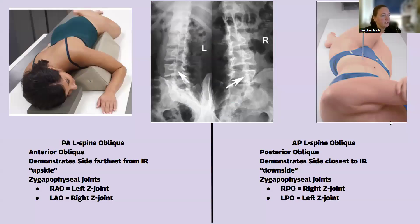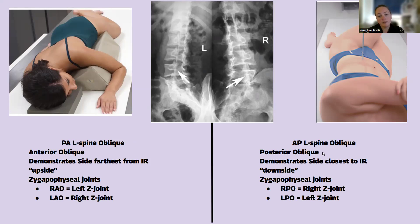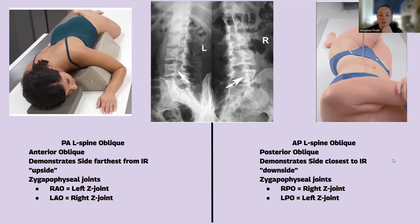Moving to lumbar spine — a similar concept. Lumbar spine obliques show the zygapophyseal joints, the joint space between the superior and inferior articular processes of the vertebrae. You can either do prone obliques (PA) or supine AP obliques. When the patient is prone in anterior obliques — RAO or LAO — you're going to see the upside Z-joints, the side farthest. Versus if they're AP or supine, you see the Z-joint closest. RPO will show the right Z-joint because that's the side of the body that's down. LPO will show the left.